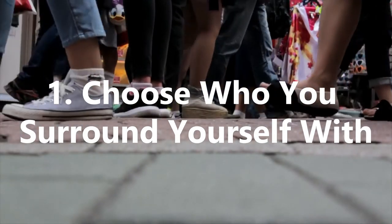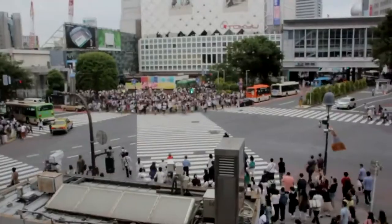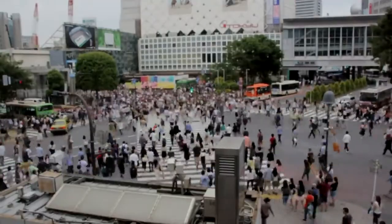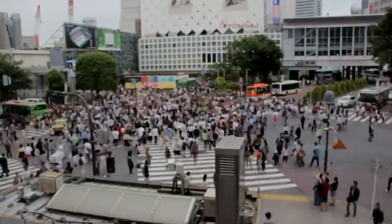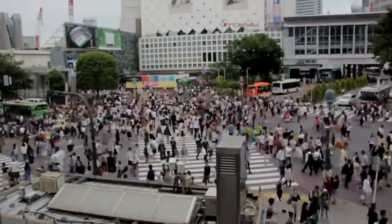1. Choose Who You Surround Yourself With. We're the average of the five closest people we surround ourselves with, which can lead us to naturally pick up their behavior and emotions.